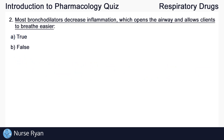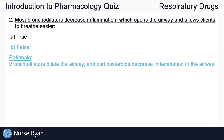Question number two: most bronchodilators decrease inflammation to open the airway and allow clients to breathe more easily. The answer here is B, false. Bronchodilators dilate the airway, and it's corticosteroids that decrease inflammation.